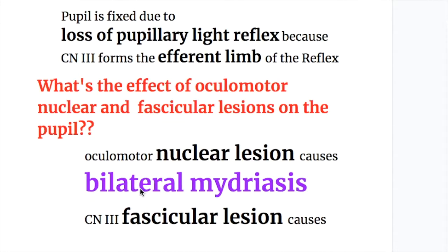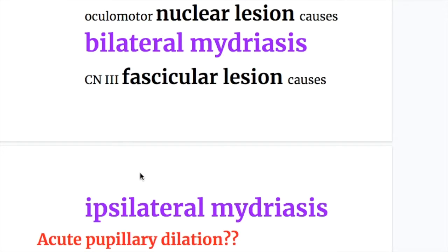Oculomotor nuclear lesions cause bilateral mydriasis, whereas oculomotor fascicular lesions cause ipsilateral mydriasis.